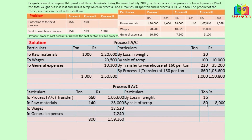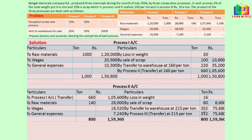First process scrap realizes Rs.100 per ton, second process Rs.100 per ton, third process Rs.20 per ton. Now the balancing figure is found. Transfer to next process 50%, warehouse 50%. Balancing figure is 704 tons — 50% to warehouse = 352 tons, 352 tons amount = Rs.75,680. Cost per ton: 75,680 divided by 352 = Rs.215 per ton.